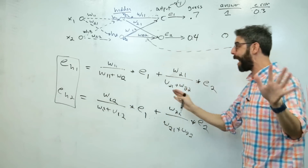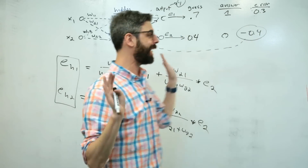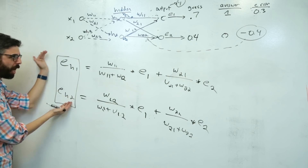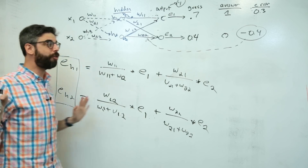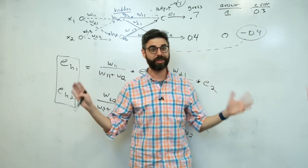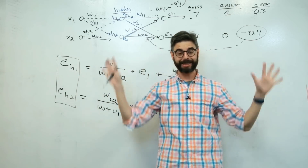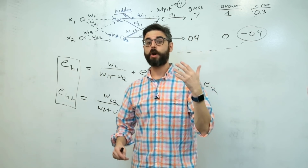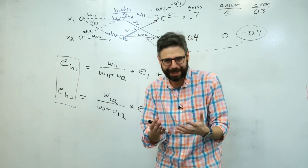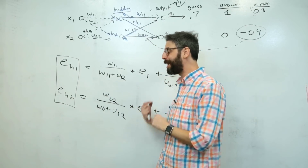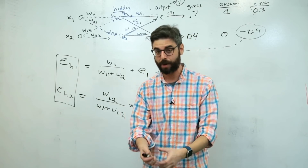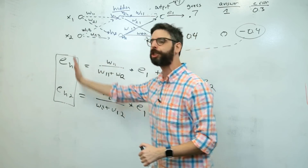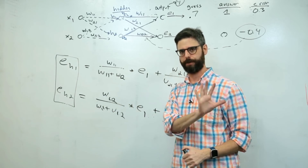That is how the hidden errors are calculated. This is the end of part one — the basic idea of backpropagation. I'm going to check for any questions or corrections, which I'll mention at the beginning of the next video, where I will also implement at least this much in code.